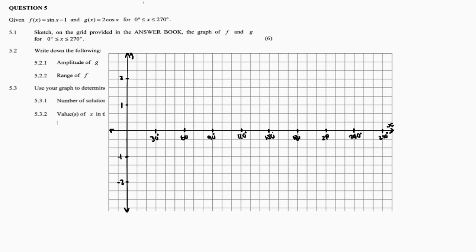Remember there's a difference between a stretch and a translation. A translation means you shift up or down by a certain number of units. So f(x) is shifted by one unit down, and g(x) is stretched by a factor of two. We will first plot the parent functions for sine and cosine before applying the transformations.